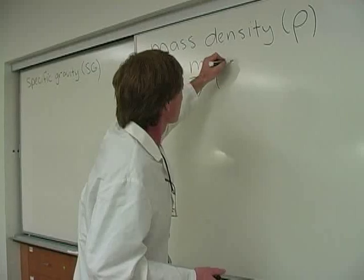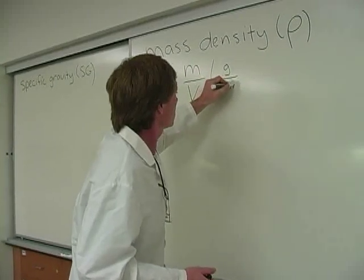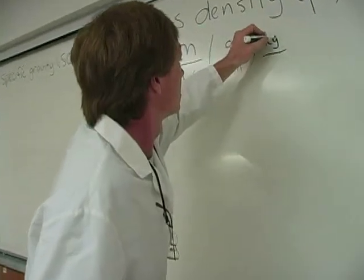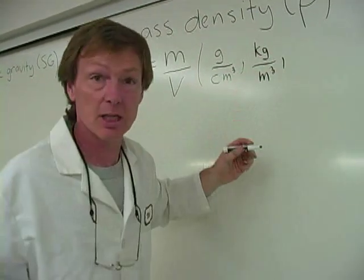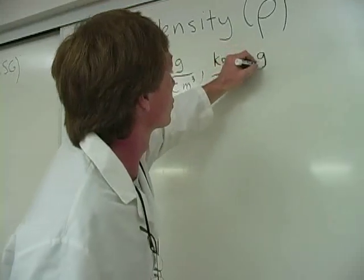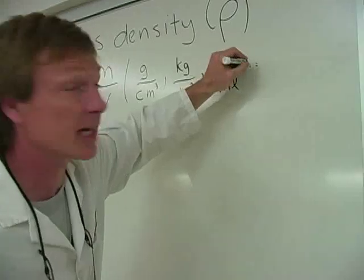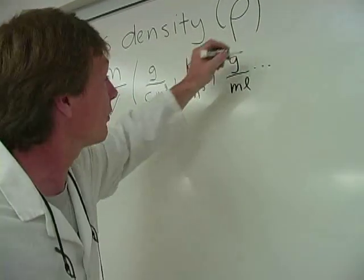So they can be units of like grams per cubic centimeter, grams per milliliter, anything like that, any kind of units of mass over volume.